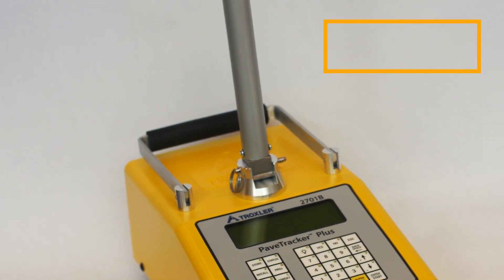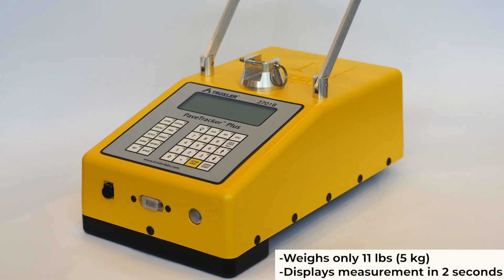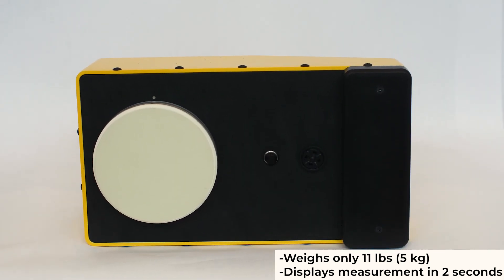It's perfect for resurfacing jobs and thin lift applications. The Pave Tracker Model 2701B Plus weighs only 11 pounds and displays measurement results in only 2 seconds.